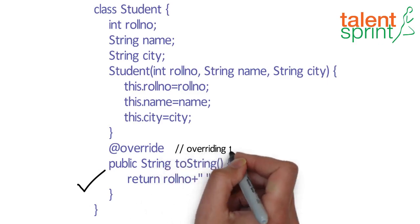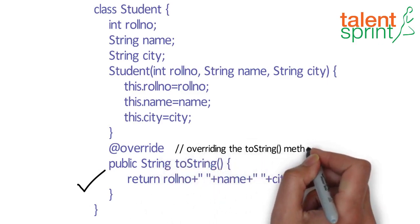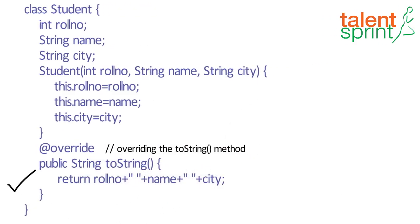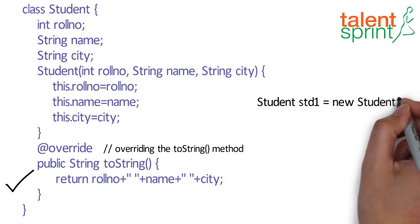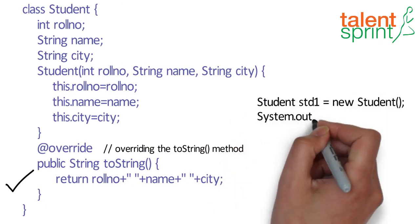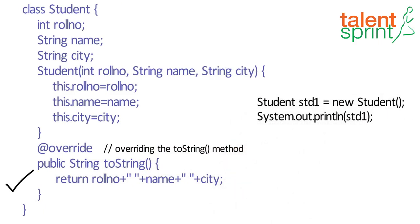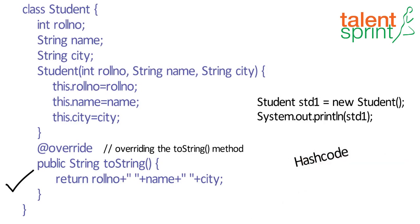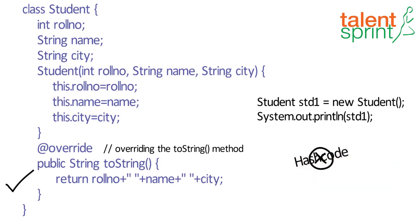And now when you create an object and you print it in your main class, it will not give you hash codes but the actual values of rollNumber, name, and city.